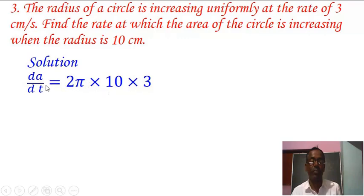After calculation we get dA/dt equals 60π cm squared per second. So this is the exact answer to this question, and this question asked us what is the value of dA/dt.